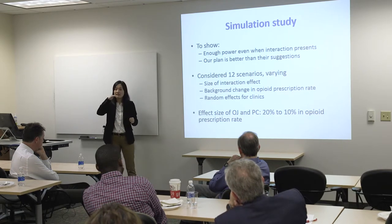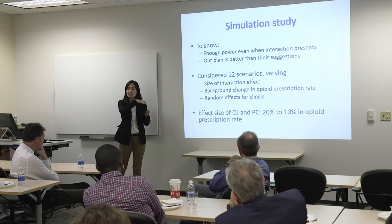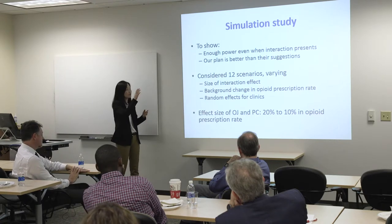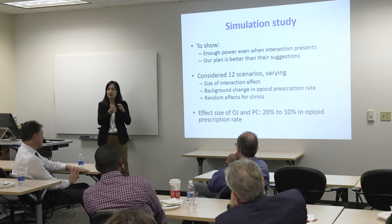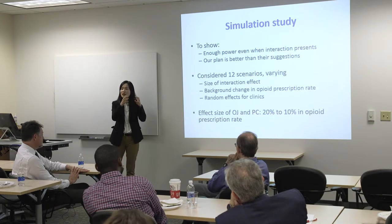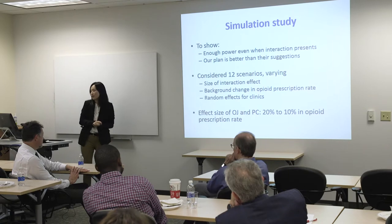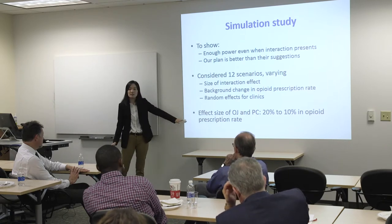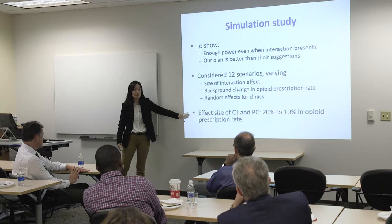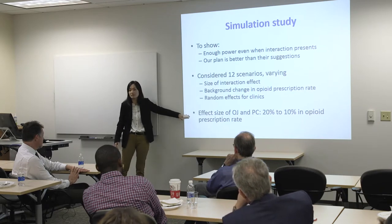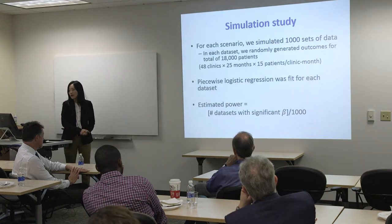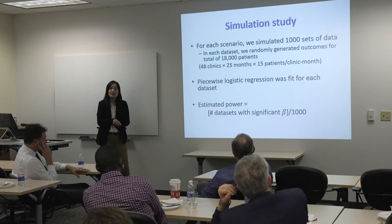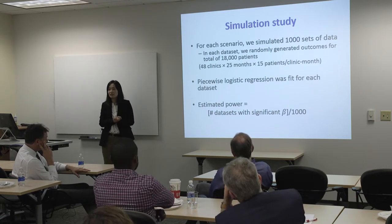I also assumed different random effects for clinics — essentially how much patients will be clustered within each clinic. We also don't know the effect size of our intervention, so I used a clinically meaningful difference provided by Kevin. For each of these 12 scenarios, I simulated 1,000 sets of data, and within each data set I simulated the outcomes for 18,000 patients. The reason this sample size is bigger than about 10,000 is that for this analysis, we are going to use some patients that already visited the site before the intervention actually starts, using EHR data.